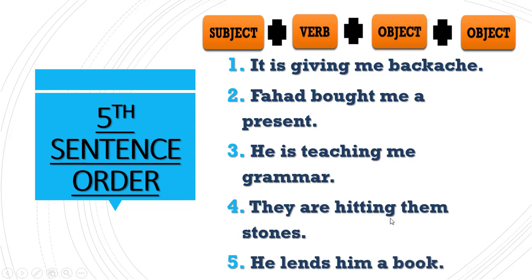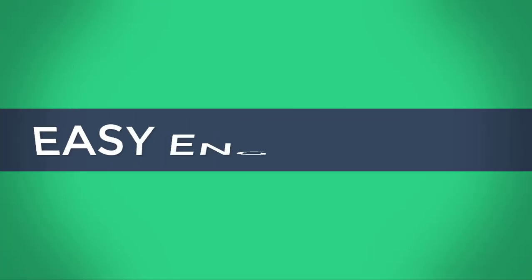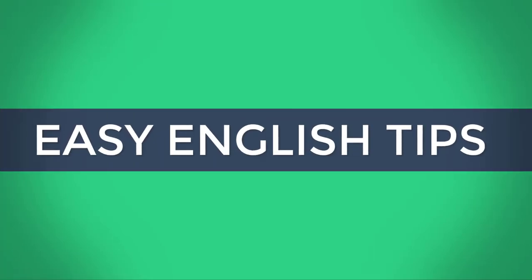That is all for today's class. We have discussed sentence structure, sentence order, and the definition of a sentence. We also learned that there are two types of object: direct object and indirect object, which we will cover in the next class. Thank you for watching — please subscribe to the channel and keep watching for more learning videos.